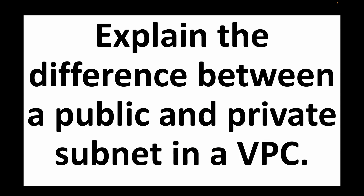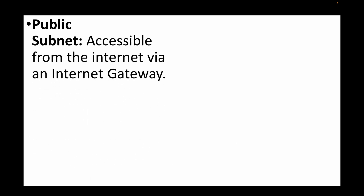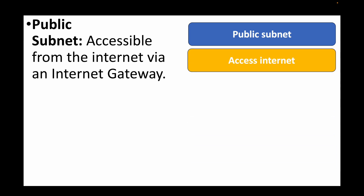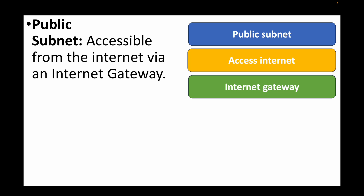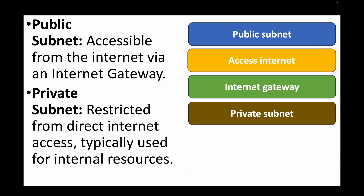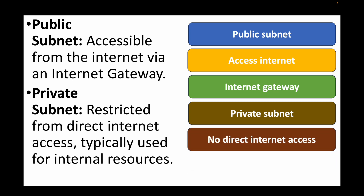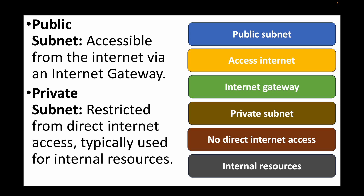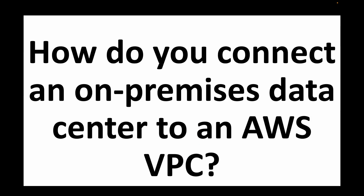The next question is: explain the difference between a public and a private subnet in a VPC. A public subnet is where you create resources that need internet access; it makes use of an internet gateway. Private subnets are for resources that don't need direct internet access — typically internal resources like databases or backend applications. Public subnets have internet access; private subnets do not have direct internet access.